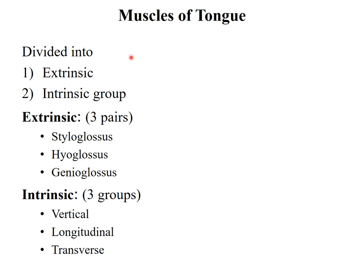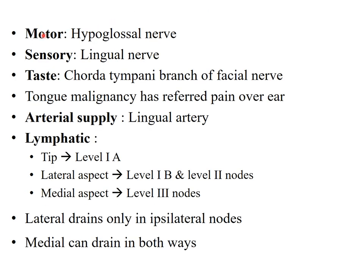The anterior two-thirds is part of the oral cavity while the posterior one-third is part of the oropharynx. The anterior part is derived from the lateral lingual swellings of the first branchial arch and has the lingual nerve as its sensory supply. The muscles of the tongue are divided into extrinsic and intrinsic groups. The extrinsic group has three pairs: styloglossus, hyoglossus, and genioglossus; the intrinsic group has three — vertical, longitudinal, and transverse. Motor innervation is by the hypoglossal nerve, and sensory innervation by the lingual nerve.